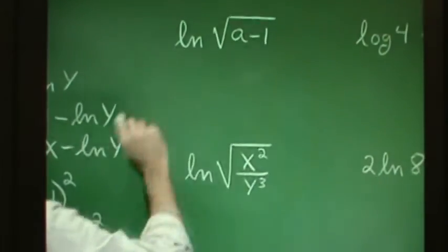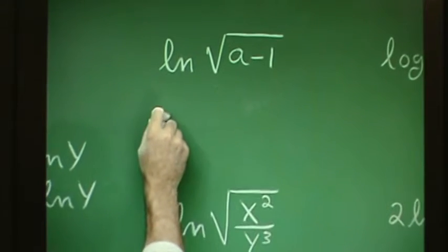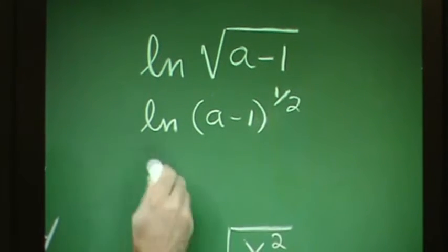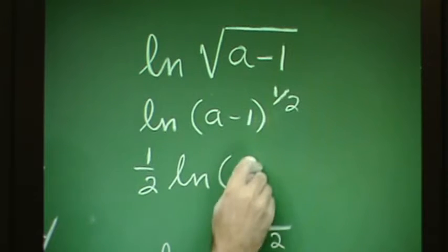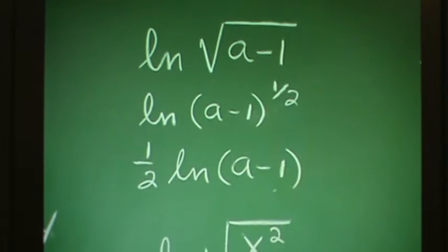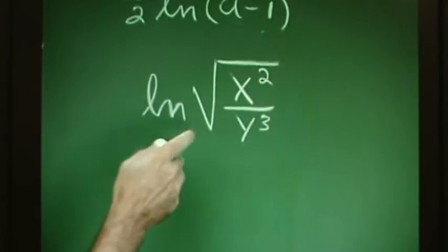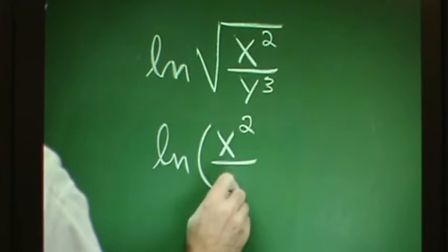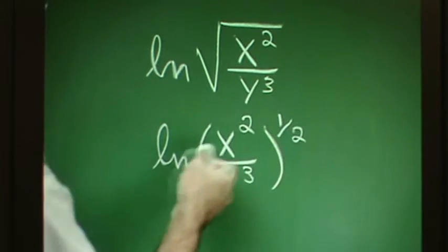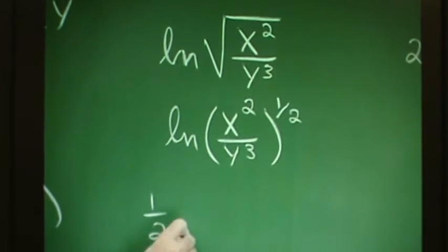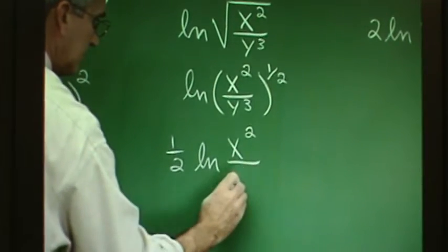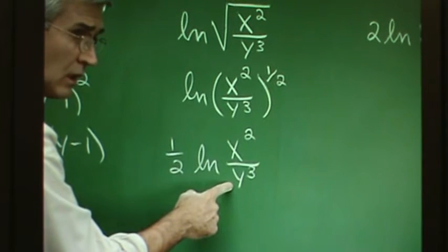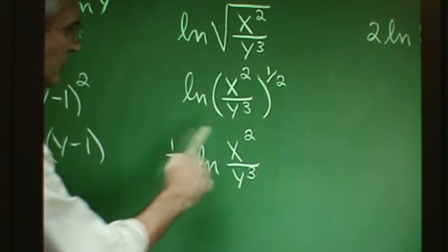When radicals are involved, it's valuable to use the fractional exponent idea. For example, the natural log of the square root of a minus 1 can be rewritten as the natural log of (a minus 1) to the one-half power. The one-half becomes the coefficient: one-half ln(a minus 1). Again, there is no distribution of natural log through this binomial. Similarly, we can apply the same idea with a radical inside a natural log of a fraction, rewriting it as a fraction to the one-half power, so the one-half becomes a coefficient.